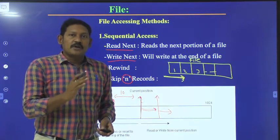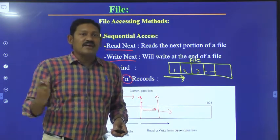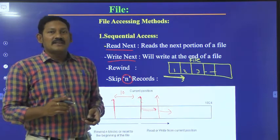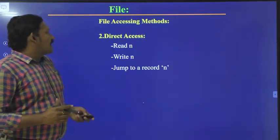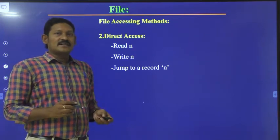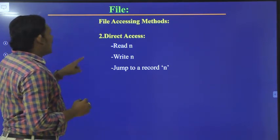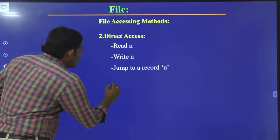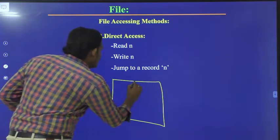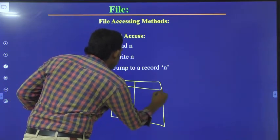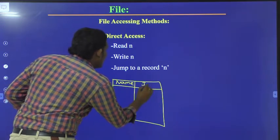Sequential accessing is the process of accessing the records one by one, one after the other, in a sequential way — that is called sequential accessing. Next we will go for direct accessing. In direct accessing, for example, suppose if there is a name and id.